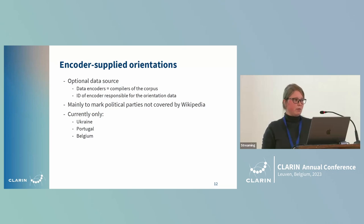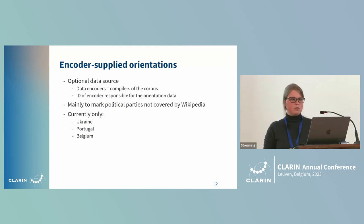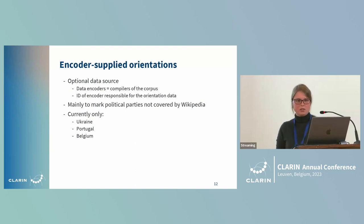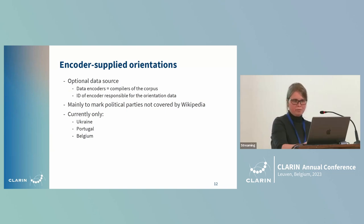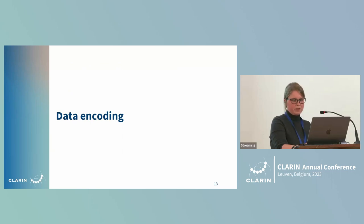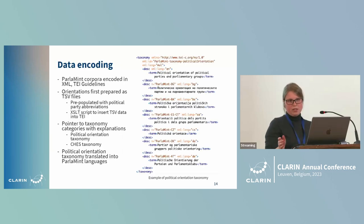Lastly, we have encoder-supplied orientations, where corpus compilers were offered an option to add their knowledge to the corpus. For each encoder we provided an ID and they are responsible for the orientation data they included. This was mainly done for political parties not covered by Wikipedia, and is currently employed only in three corpora: Ukraine, Portugal, and Belgium.